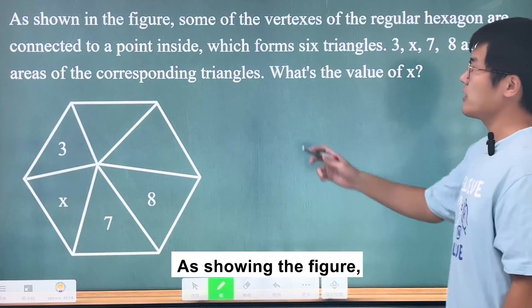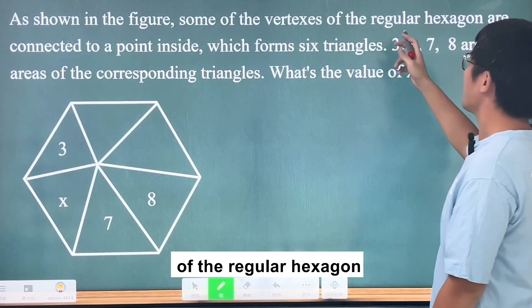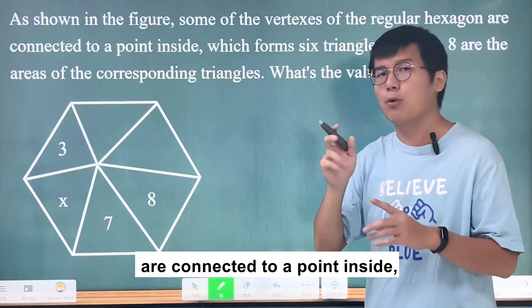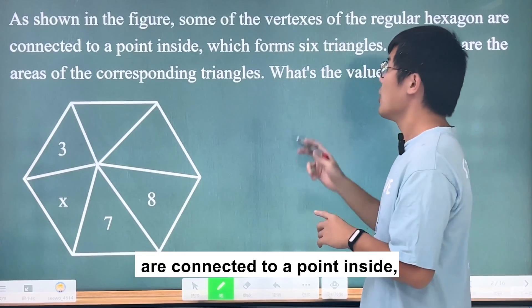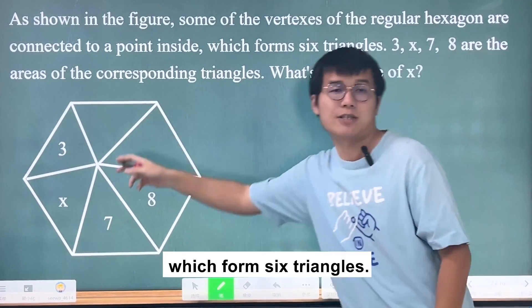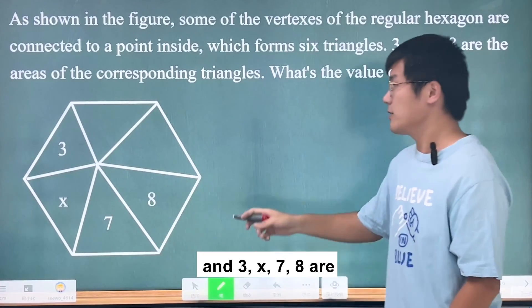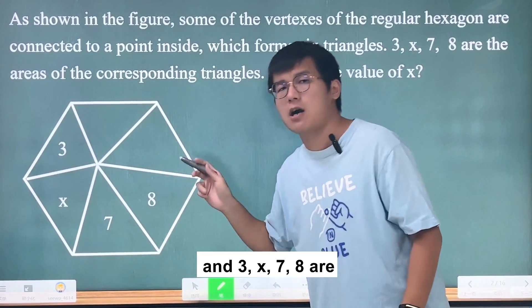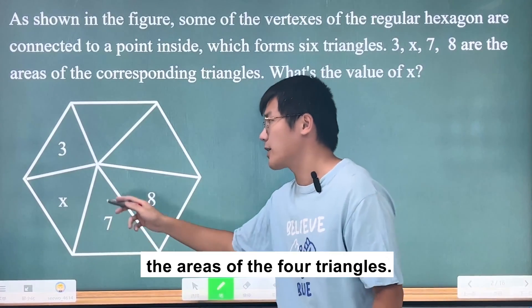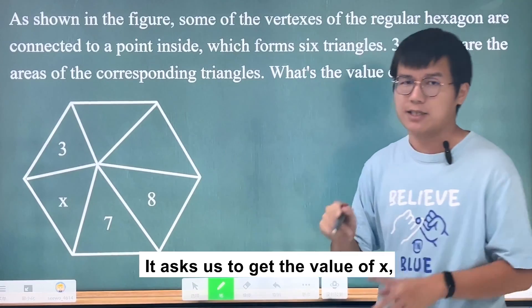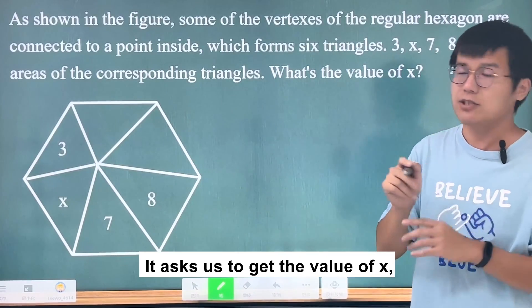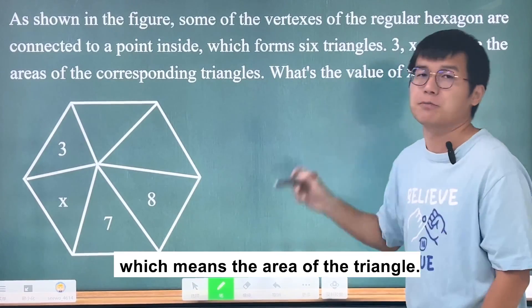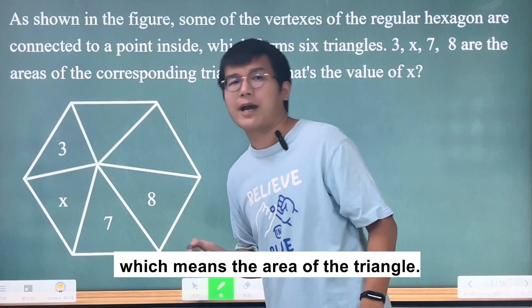As shown in the figure, some of the vertexes of the regular hexagon are connected to a point inside, which forms six triangles. The values 3x, 7, and 8 are the areas of four of the triangles. It asks us to get the value of x, which means the area of that triangle.